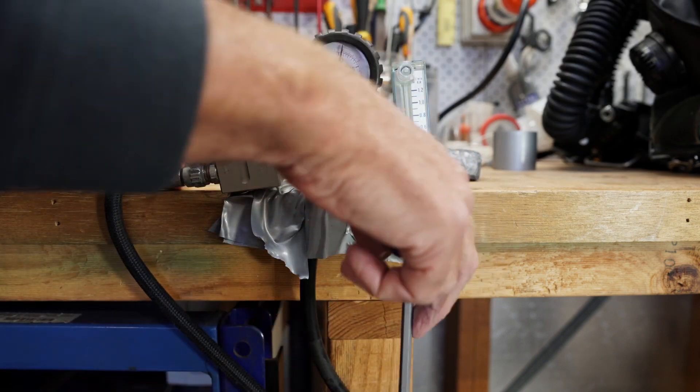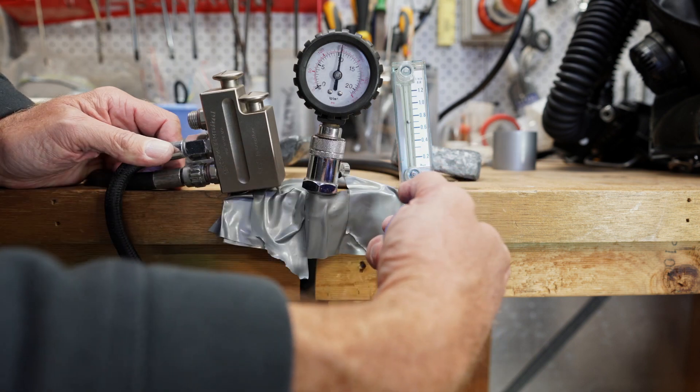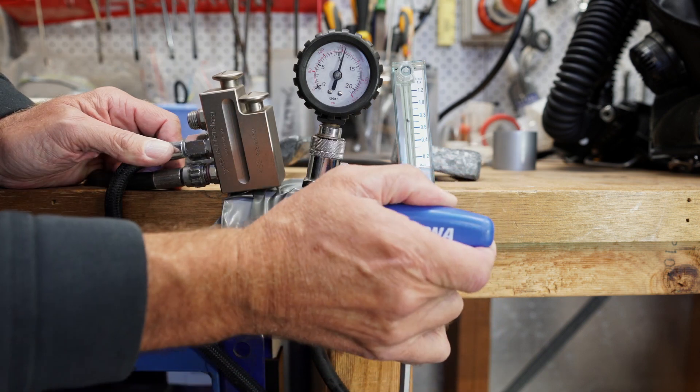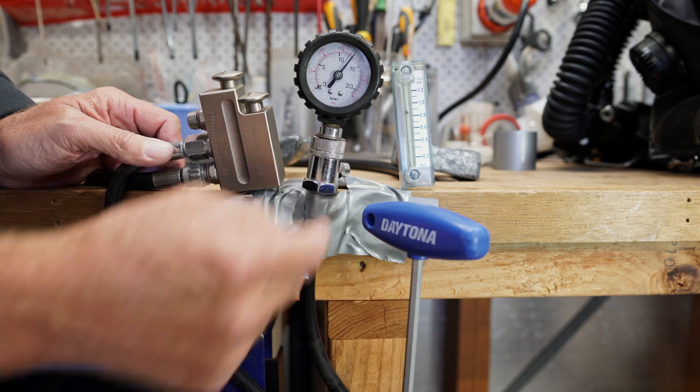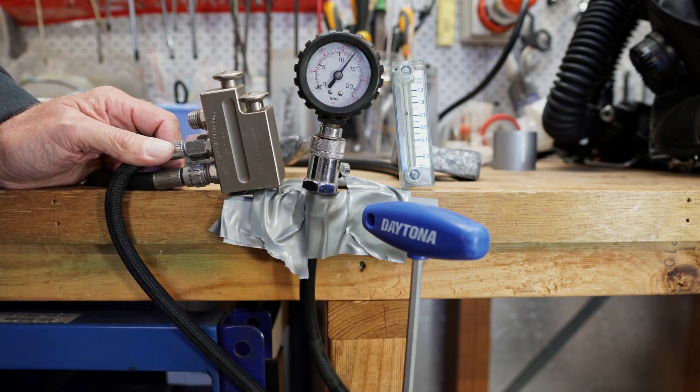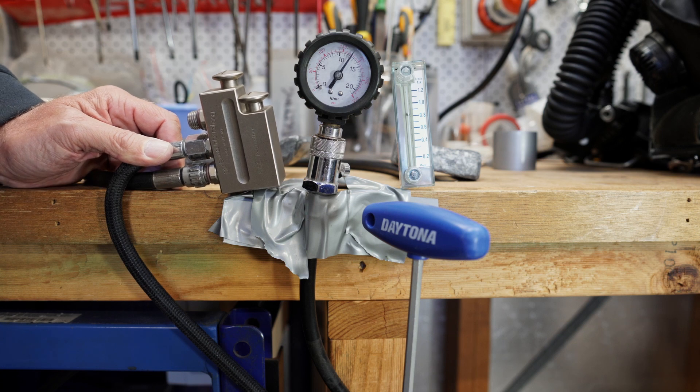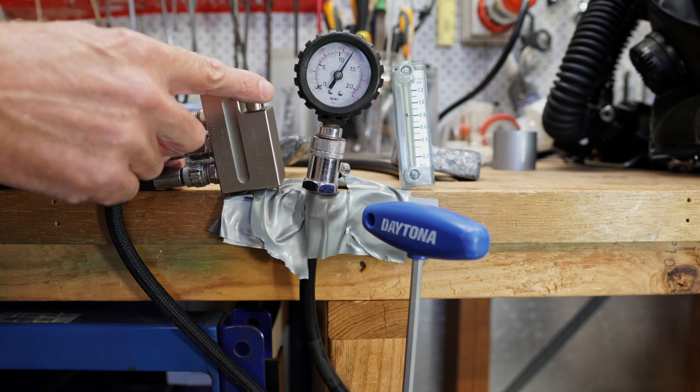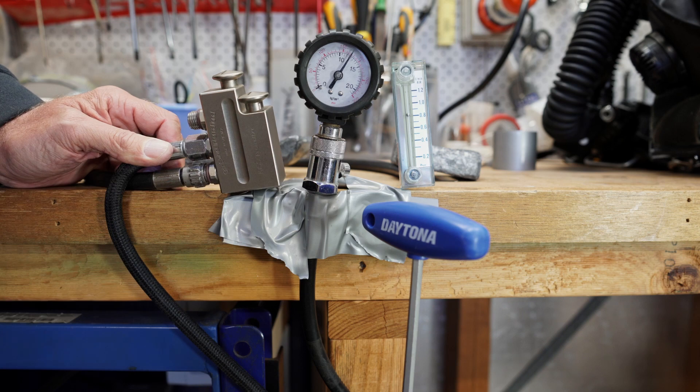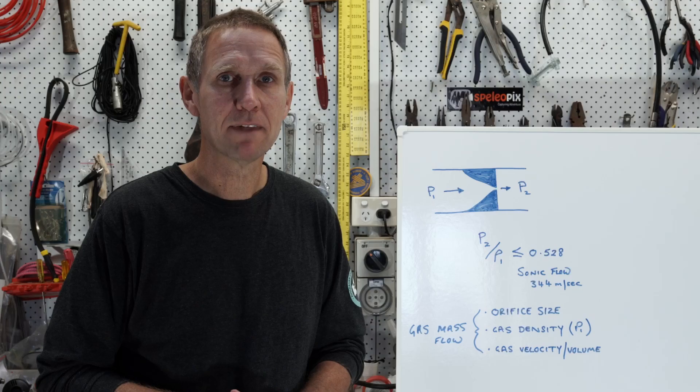And like the original KISS valve this is a fixed orifice and that flow rate can only be adjusted by adjusting the intermediate pressure of the regulator which I can demonstrate here. So if we increase the intermediate pressure we'll increase the flow rate. So yeah just another version of another KISS valve, this one is a dual manual add valve for both diluent and oxygen as well as having an orifice, a KISS valve if you like inside.